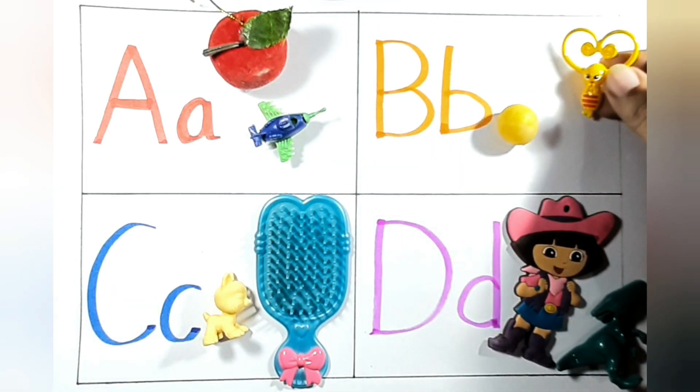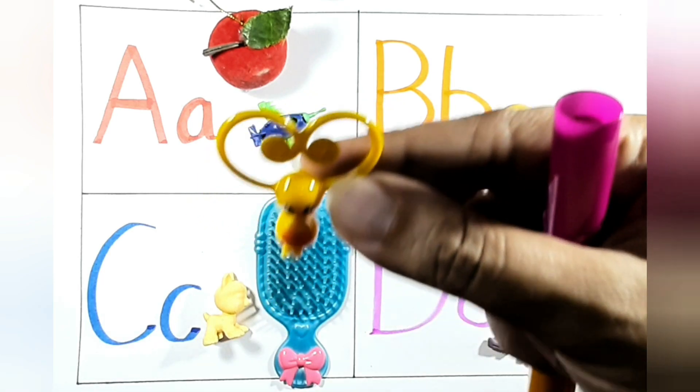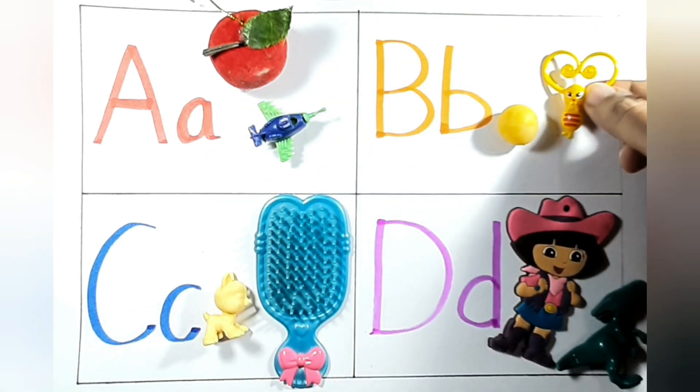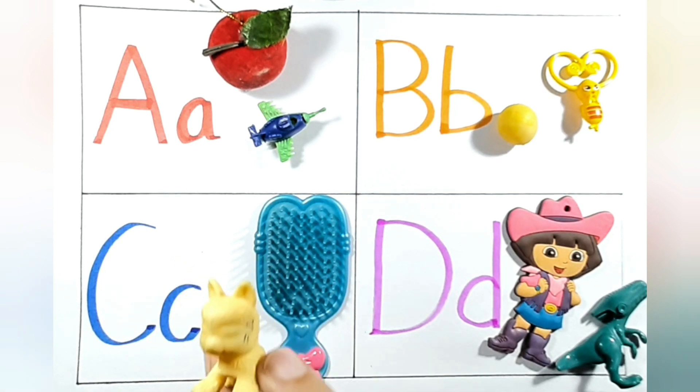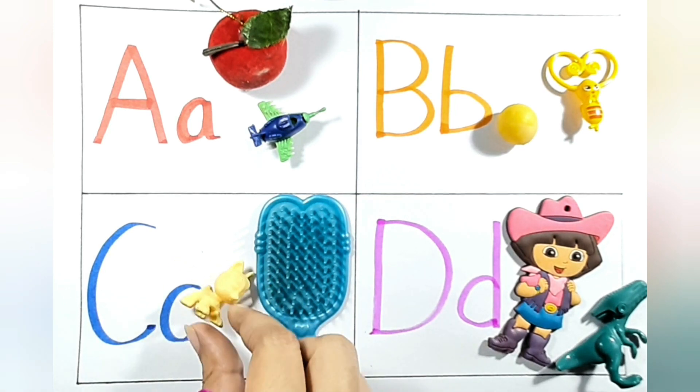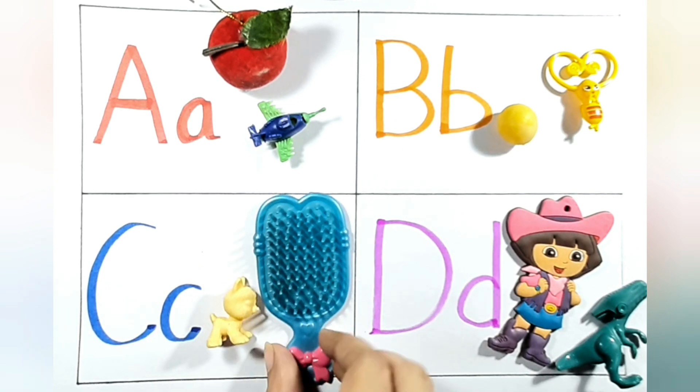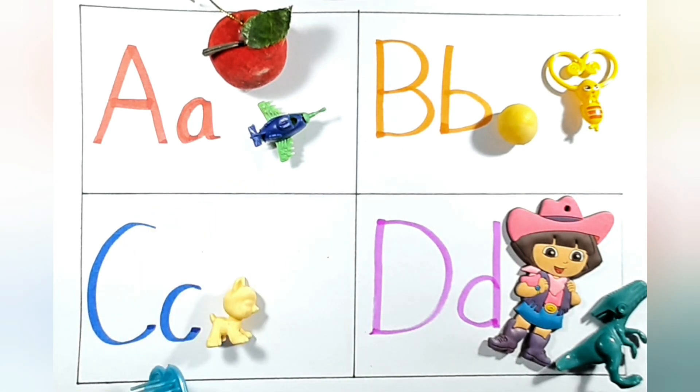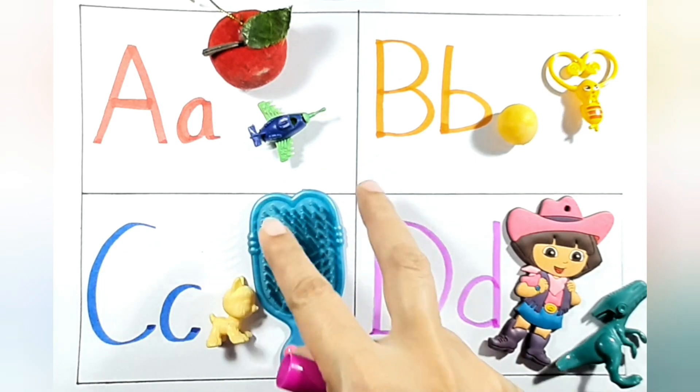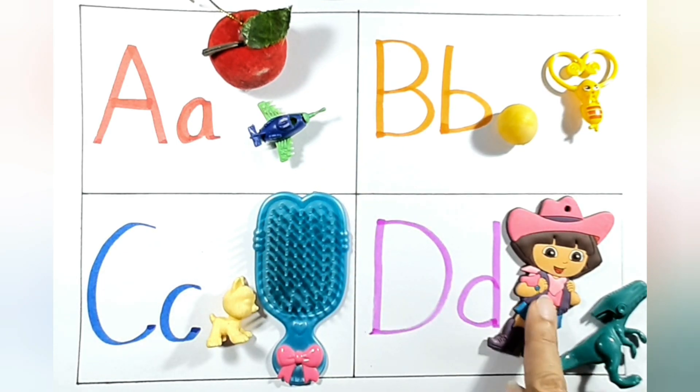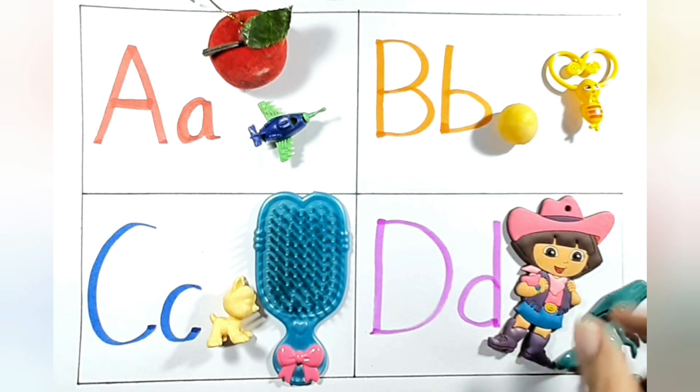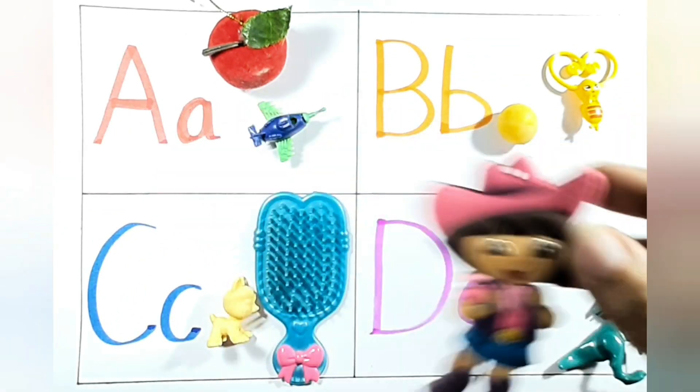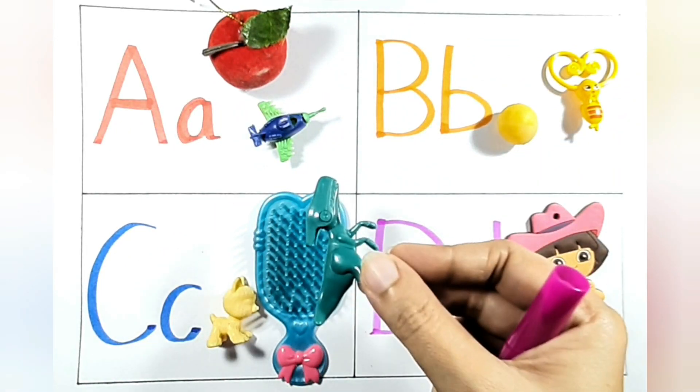C for cat. C for comb. D for Dora. D for dinosaur.